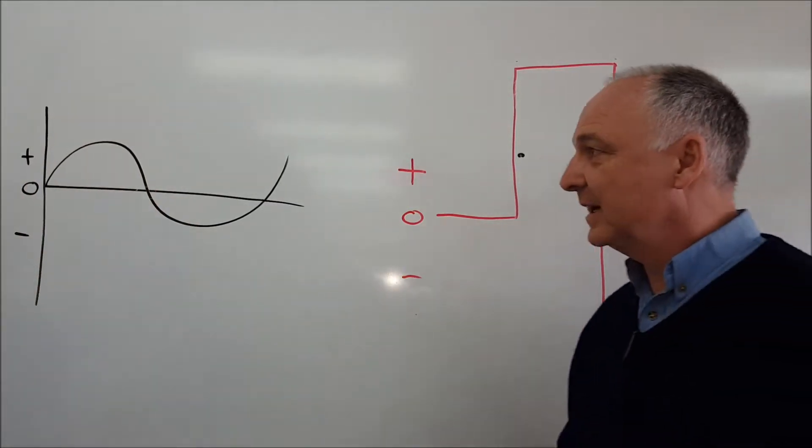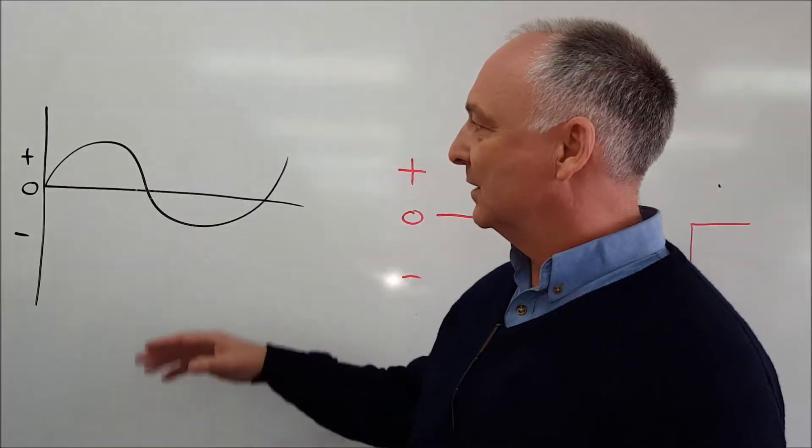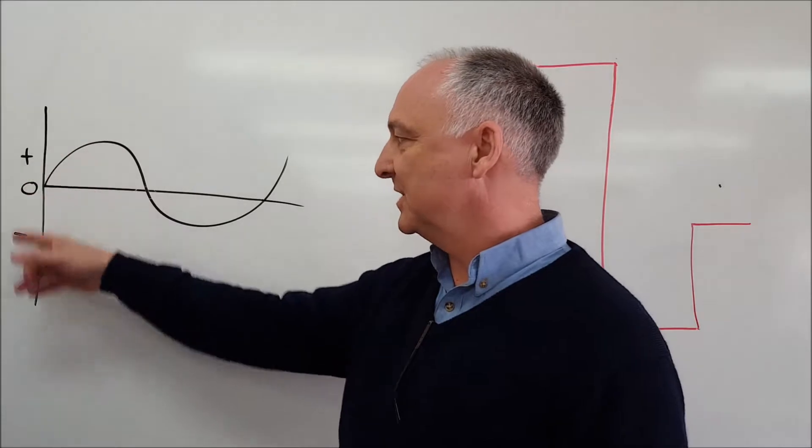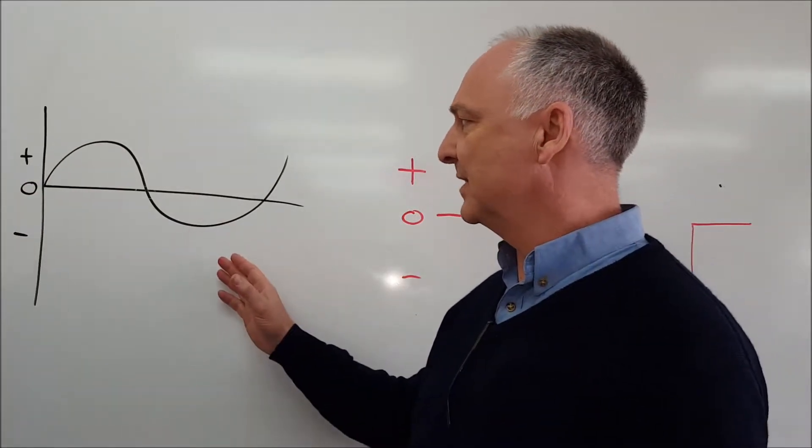Traditionally, a transformer rectifier power source has a standard sine wave. With the standard sine wave, we've got a positive and a negative half cycle, and we're pretty much restricted with that.